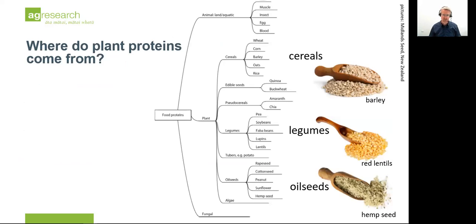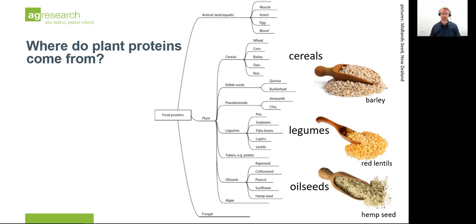Some of the sources of proteins in the plant kingdom include the cereals, the legumes, and the oilseeds. We have some examples here of barley from the cereals, red lentils from the legumes, and hemp seed from the oilseeds. This is not a comprehensive catalogue, but it gives you the idea of some of the categories and classes within that plant kingdom.